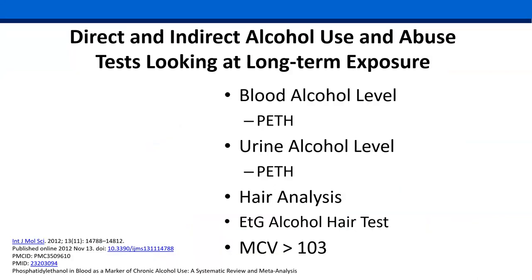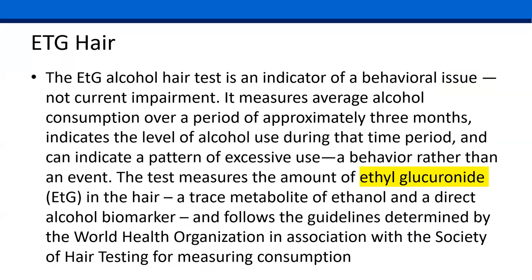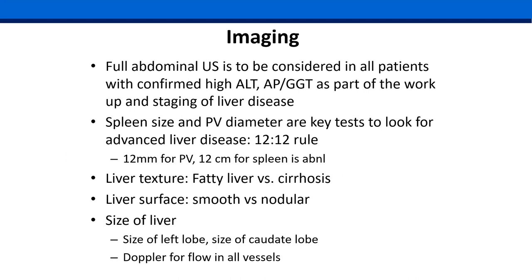For alcohol assessment, PEth is a blood test looking back six weeks. There's also a urine PEth, hair analysis for PEth, and ethylglucuronide (ETG). If you see an MCV over 103, do a B12 and/or alcohol test. The ethylglucuronide hair test is expensive and hard to get paid for, but if you need to document somebody is alcohol-free, it's another good option. For imaging, get a full abdominal ultrasound Doppler on all your liver patients. Get a portal vein diameter and spleen size — the 12-12 rule: greater than 12 millimeters portal vein diameter and greater than 12 centimeters spleen size means they need upper endoscopy, liver cancer surveillance, and closer follow-up.